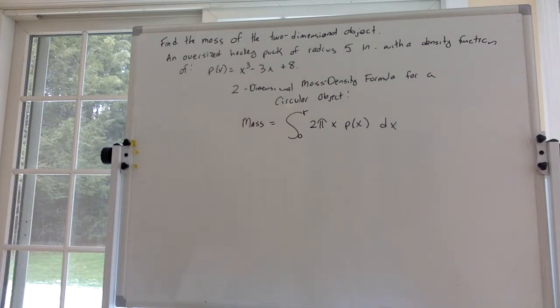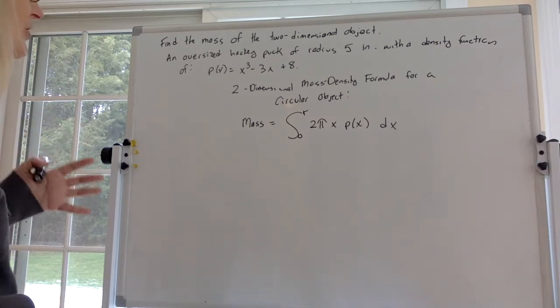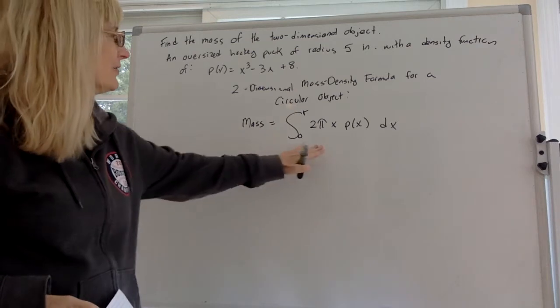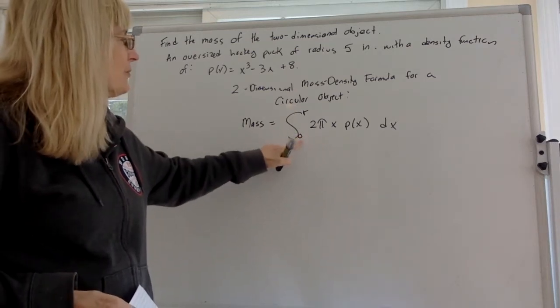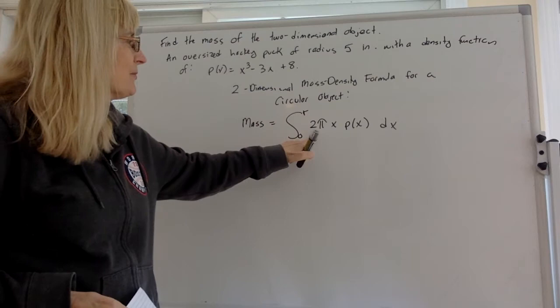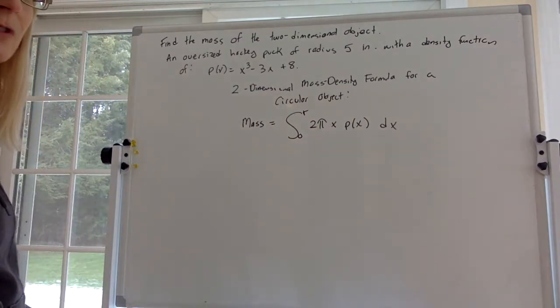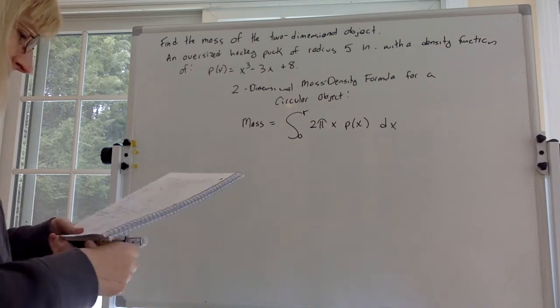So what we have to know is the formula to use. In order to find the mass, we have to integrate the density function from 0 to the radius, but we have to multiply it by 2 pi times x dx. That's the formula that we need.